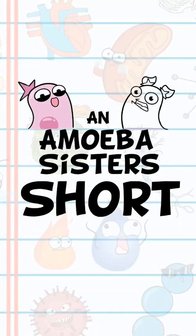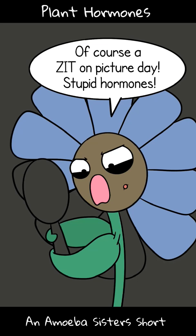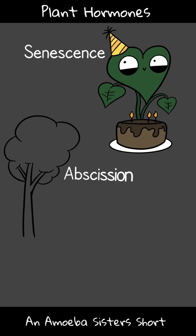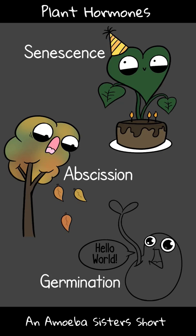Welcome to an Amoeba Sisters short, this one on plant hormones — because plants have hormones too. First, some vocabulary so the functions I mention make sense. Senescence refers to the plant aging. Abscission refers to the dropping of plant parts, such as the dropping of leaves. Germination refers to a seed beginning to grow and sprout.